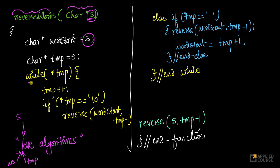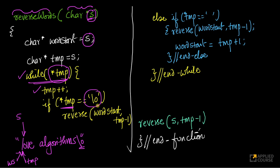What I do here is a while loop on temp. I'll keep moving my temp till I reach the end of the string — while the data stored at temp is not equal to backslash zero, I'll keep incrementing my temp. If temp is not equal to backslash zero, that means I haven't reached the end. If I've reached the end, I need to reverse the last word.